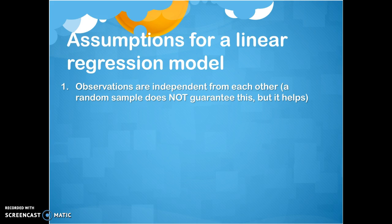The first assumption: our dependent variable data values — our observations, for example our coffee sales — need to be independent from each other. The sales of coffee on one day should not influence the sales of coffee on another day. There's a big misconception in a lot of textbooks that say if you take a random sample it guarantees that your data are independent of each other, and that's not always true.